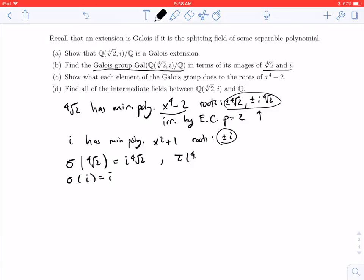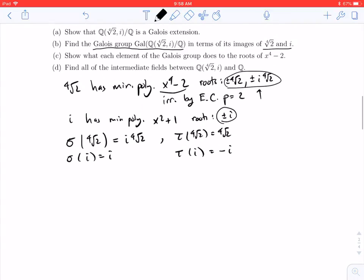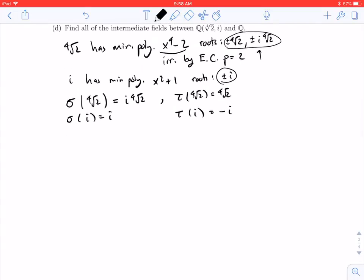Tau is going to fix the fourth root of 2. But then when we apply it to i, I'll have it swap it over to minus i. And if I let it be i, it'd just be the identity. So I claim from sigma and tau I can generate all of the other automorphisms.